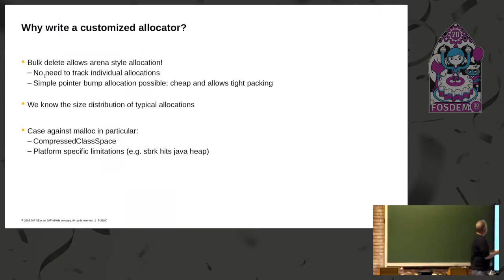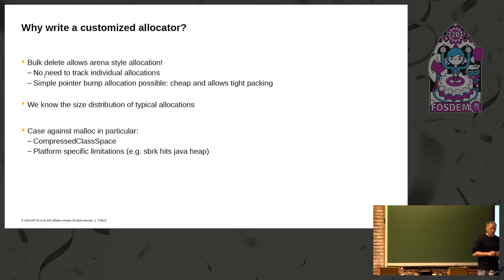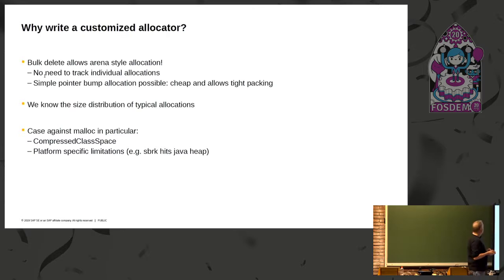This brings us to the question: why bother writing a custom allocator? We could use a general-purpose allocator like malloc. The basic answer is because we think we can do better. Because we have a bulk-delete scenario, we can get away with arena-style allocation, which is actually pretty fast and very memory efficient. We do not have to track individual allocations for the purpose of freeing them. A general-purpose allocator like malloc does a lot of work which we don't have to do.